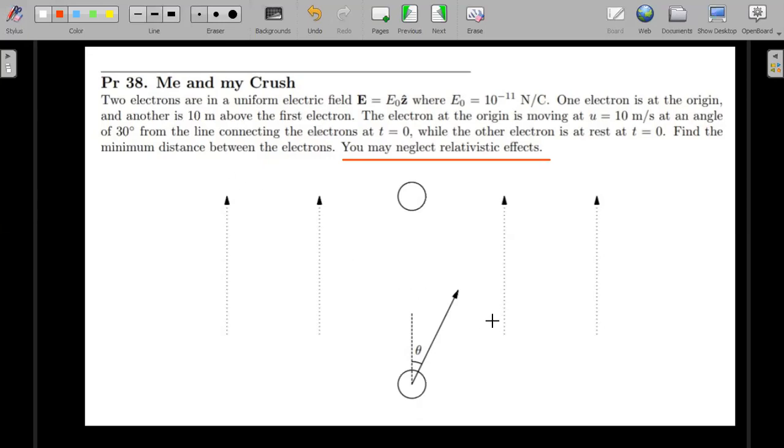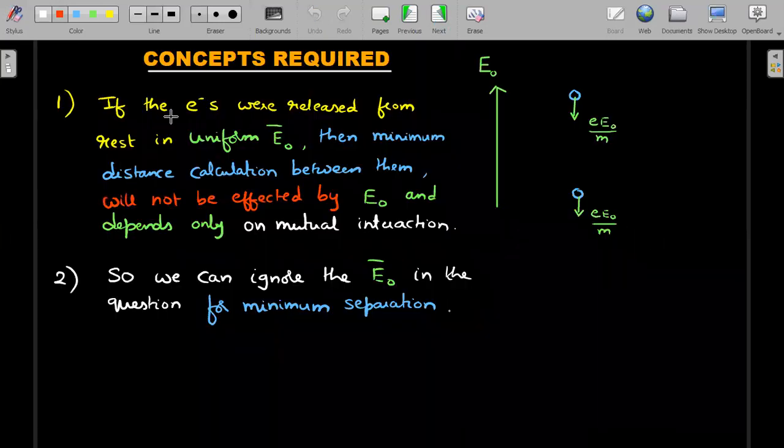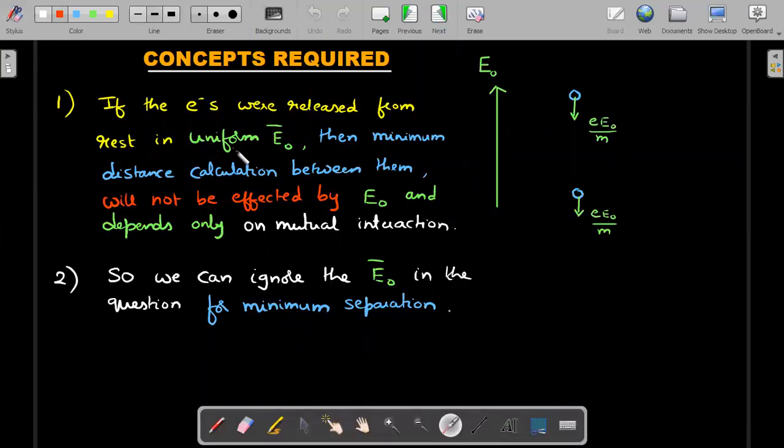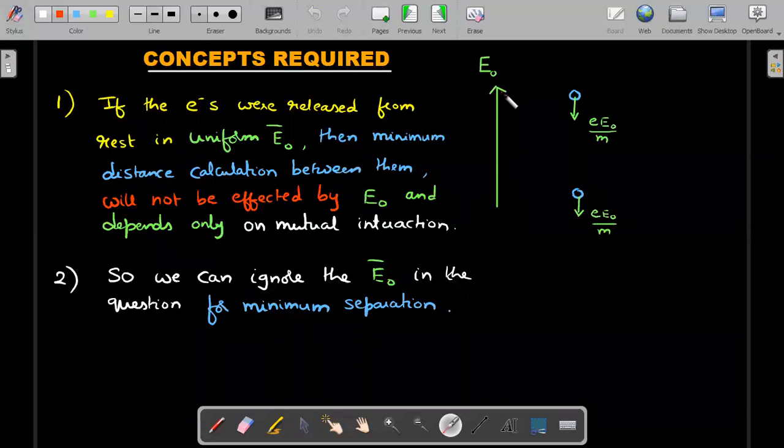Find the minimum distance between electrons. You may neglect the relativistic effects. We'll first cover the concepts involved and then go through the solution. Here are the concepts. First and foremost, I'll imagine another problem situation in which the two electrons are actually left on their own, no one is projected initially, and there is a uniform electric field.